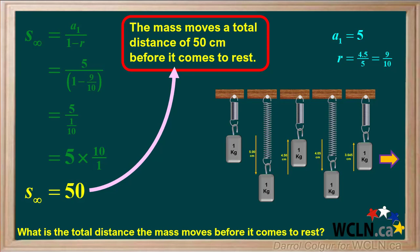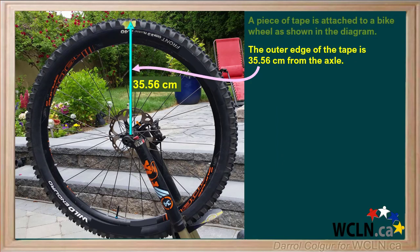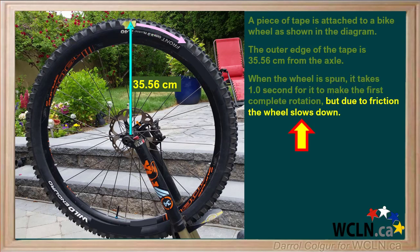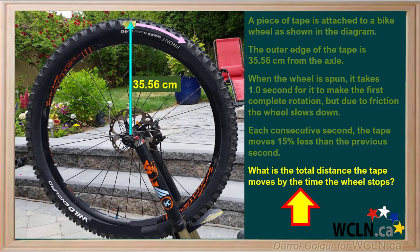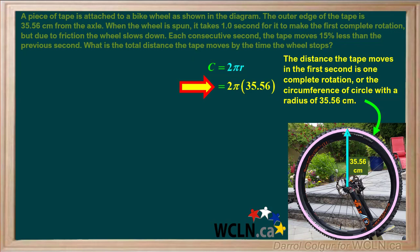Let's do another example of an application of an infinite series. A piece of tape is attached to a bike wheel as shown in the diagram. The outer edge of the tape is 35.56 cm from the axle. When the wheel is spun, it takes one second for it to make the first complete rotation. But due to friction, the wheel slows down, and each consecutive second the tape moves 15% less than the previous second. The distance the tape moves in the first second is one complete rotation, or the circumference of a circle with a radius of 35.56 cm. The circumference is 2πr, which is 2π times 35.56, or 223.43 cm.